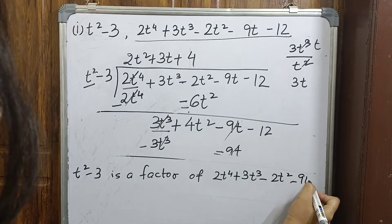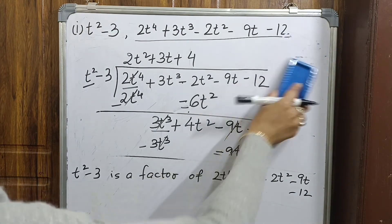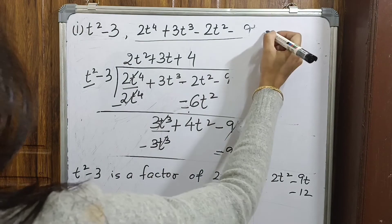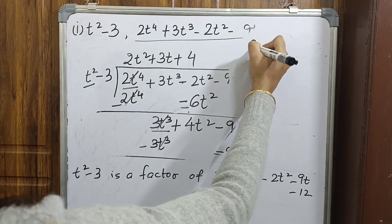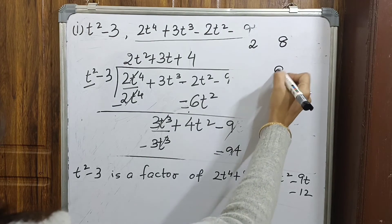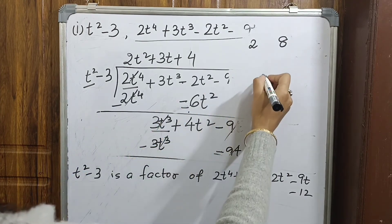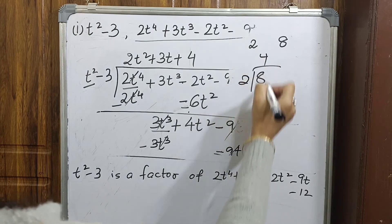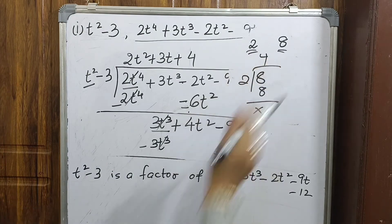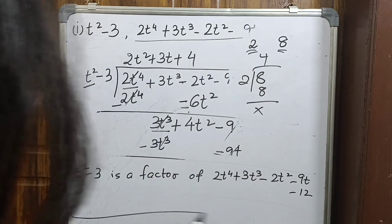For clearer understanding, let me show you with numbers. We know 2 is a factor of 8. When we divide 8 by 2, we get no remainder, which proves 2 is a factor of 8. The same logic applies to polynomials.